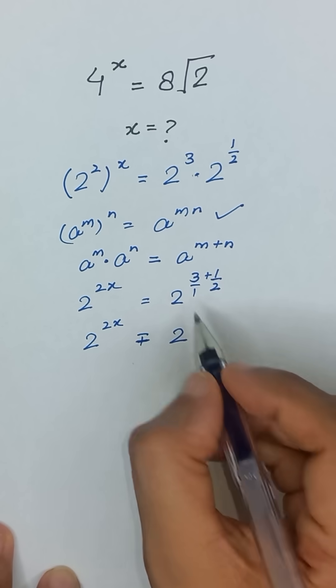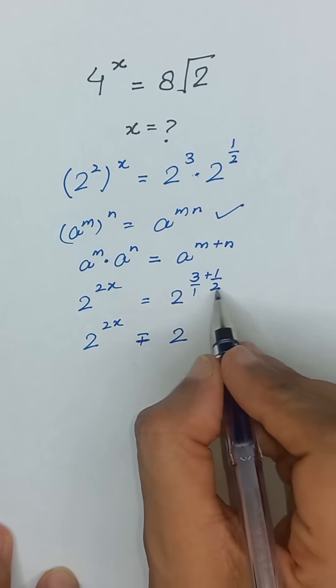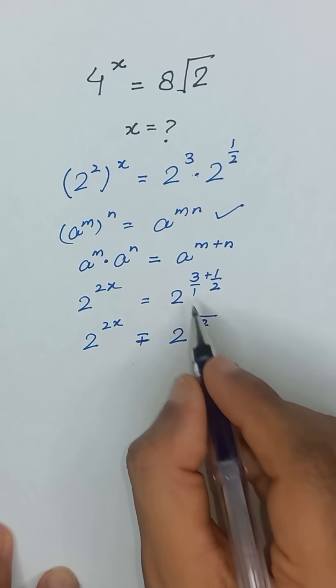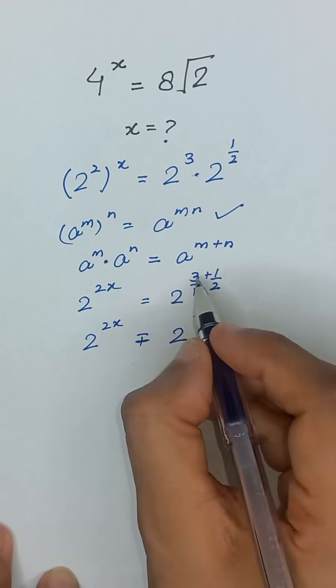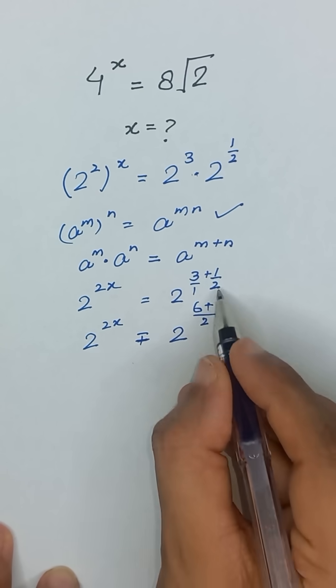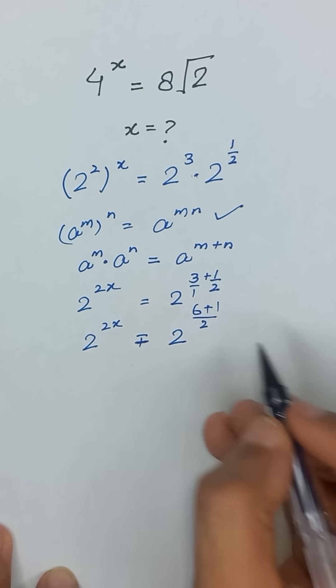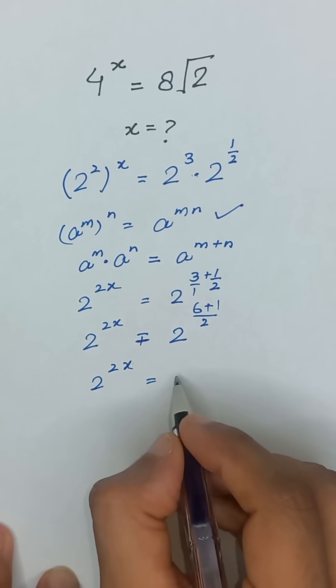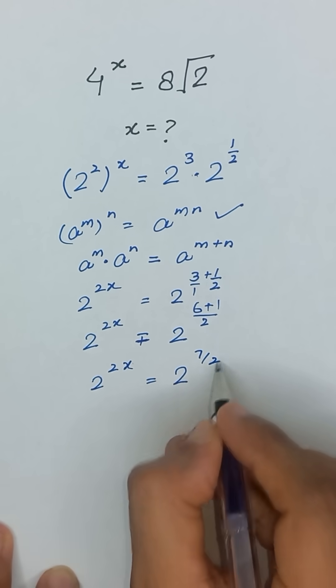Here we have 3, so we can write it as 3 divided by 1. The LCM of the denominators will be 2. 3 times 2 is 6, plus 1 times 1 is 1, giving us 7. It will become 2 to the power 2x equals 2 to the power 7 divided by 2.